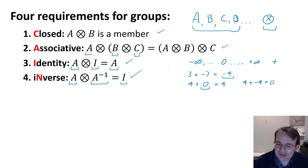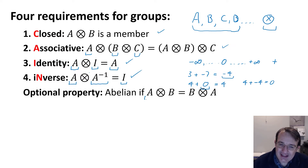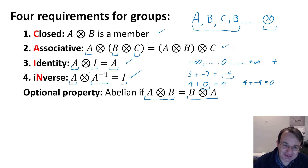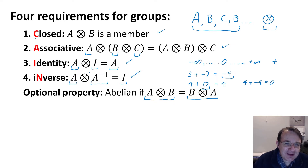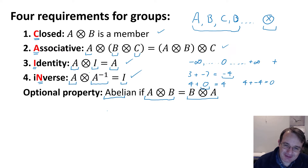There is one other optional property for groups, called whether or not they're Abelian. This does not have to be true — you can have a group even if it isn't — but if a operated on b equals b operated on a, then the group is said to be Abelian. Some groups are Abelian, others are not. A helpful acronym to remember the four required properties is CAIN: Closed, Associative, Identity, and Inverse — and then the optional property gives you 'able', so CAIN and able.